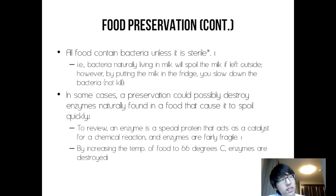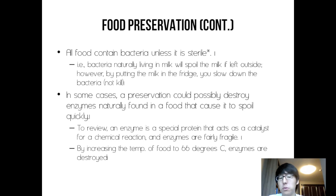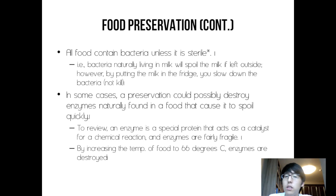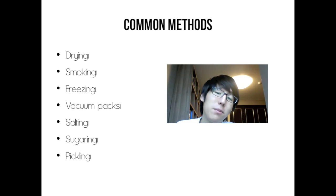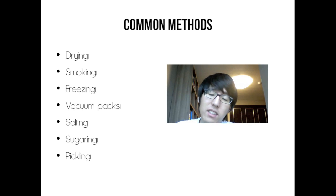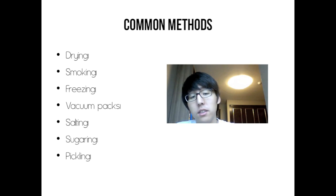To review: an enzyme is a special protein that acts as a catalyst for a chemical reaction. Enzymes are fairly fragile — by increasing temperature of foods to 66 degrees Celsius, enzymes are destroyed. Common preservation methods are drying, smoking, freezing, vacuum packs, salting, sugaring, and pickling.